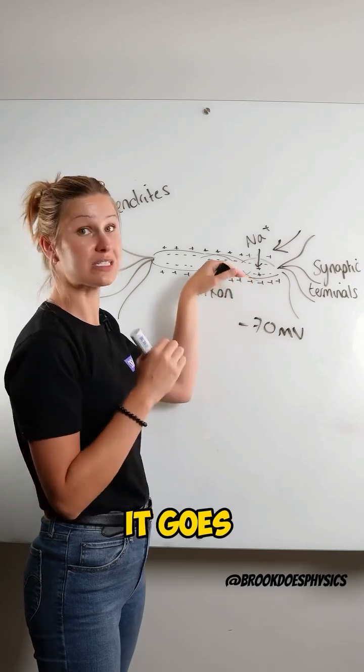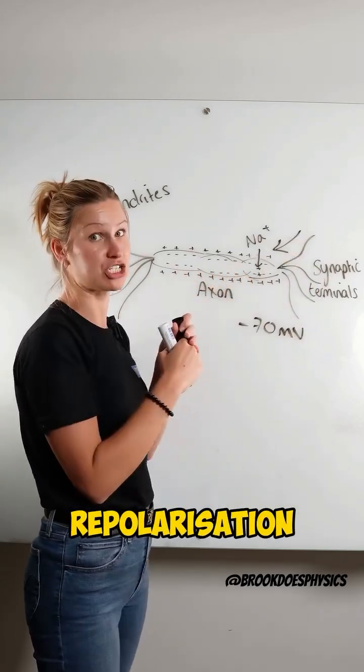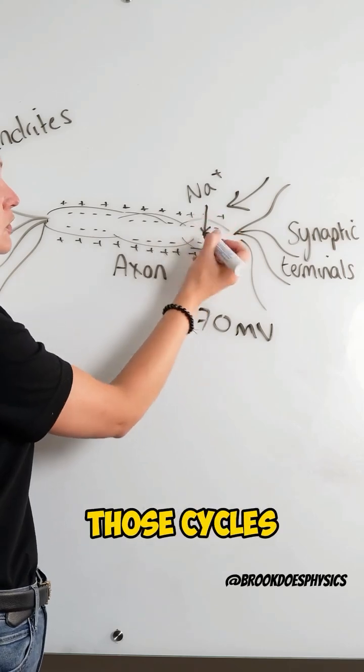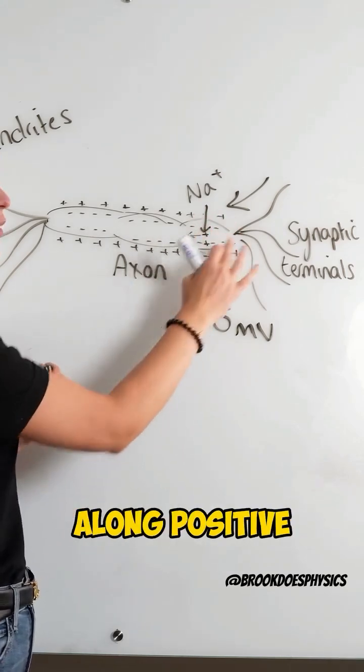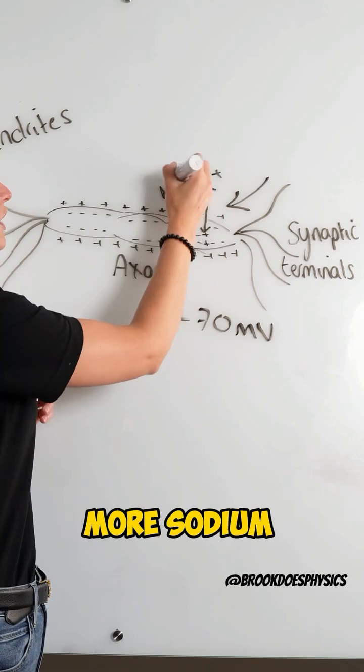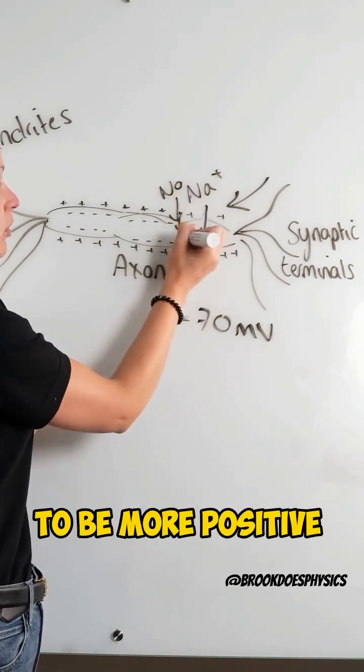Now it goes through cycles of depolarization and then repolarization. Because it goes from those cycles where this is positive, the signal moves along, positive to negative, and then more sodium ions move in, causing this to become more positive.